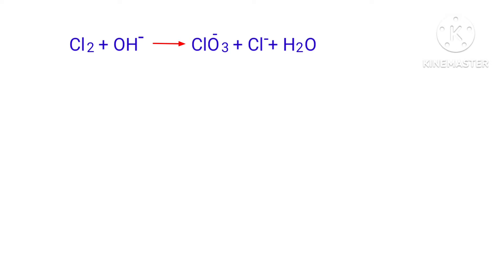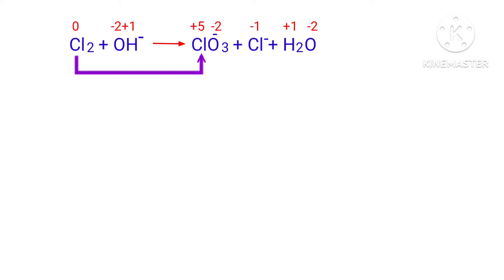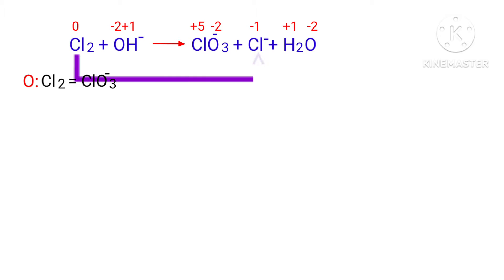Identify the reducing and oxidizing agents by the rules of assigning oxidation numbers. In this equation, Chlorine has a charge of 0 and it is changing into plus 5, so Chlorine is being oxidized. The Chlorine has a charge of 0 and it is changing into minus 1, so Chlorine is being reduced.